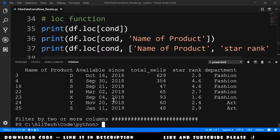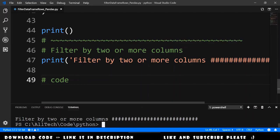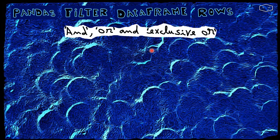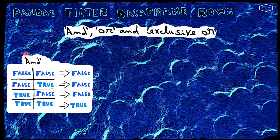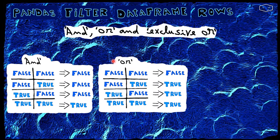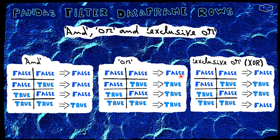Let's go to the final exercise: filtering by two or more columns. If you don't know how AND, OR, and exclusive OR work, it's very easy. With two conditions and the AND operator, it is always true if both are true; if at least one is false, it returns false. With the OR operator, it returns true if at least one is true, and false only if both are false. The XOR operator returns true when the two values are different — one false and one true — and returns false when both are equal: both false or both true.